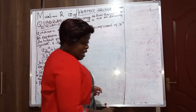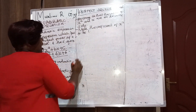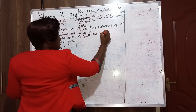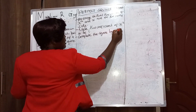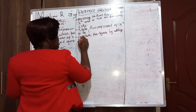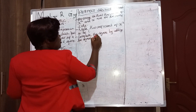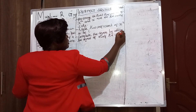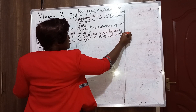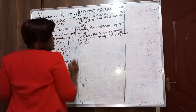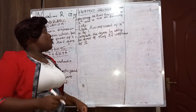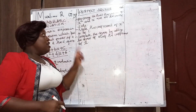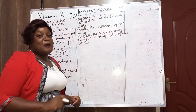Complete the square by adding the square of a half the coefficient of x. So we have made the coefficient of x squared equal to 1, and then complete the square by adding the square of half the coefficient of x.